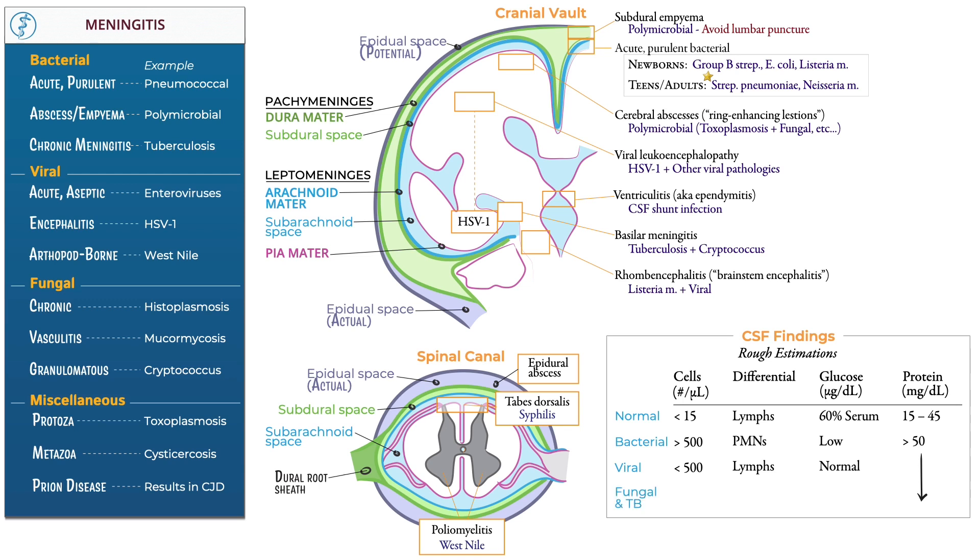Finally, for fungal and TB, indicate that the cell count varies widely. Typically, it usually comprises lymphocytes. And as mentioned, importantly, the glucose is low.